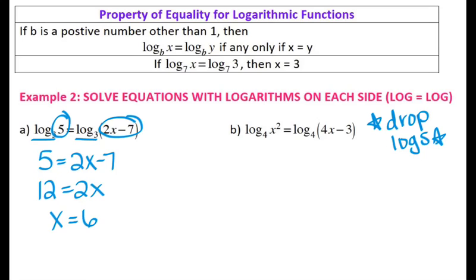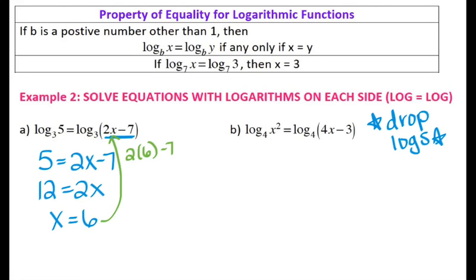With logarithmic equations, you always want to double-check your answers, especially when you have a variable inside your logarithm. Plug x = 6 in: 2 times 6 minus 7 gives 12 minus 7, which is 5 — positive. You're checking that the argument is positive, because you cannot take the logarithm of a negative number. It checks out, so the answer is x equals 6.